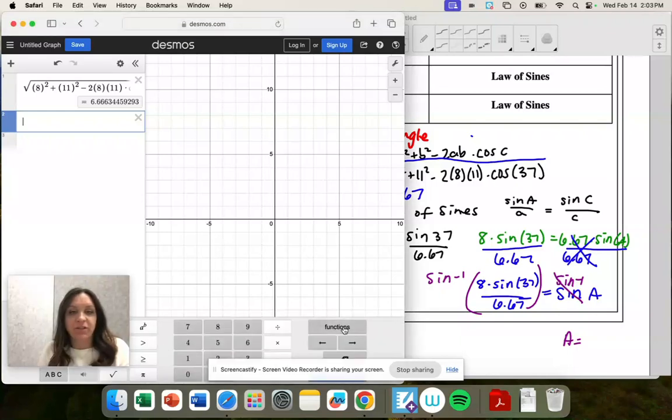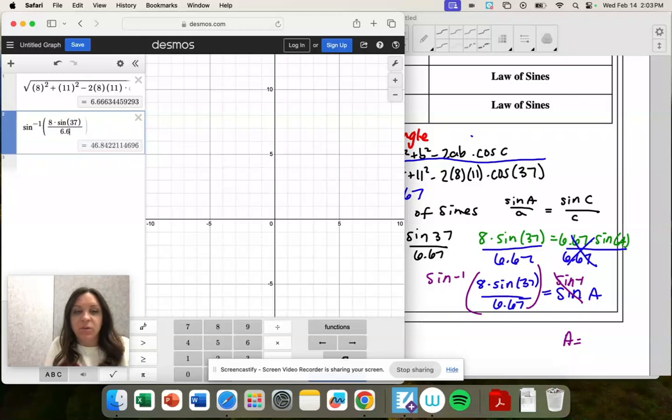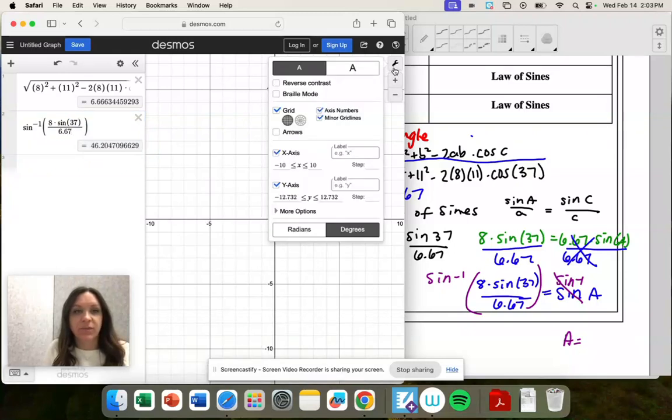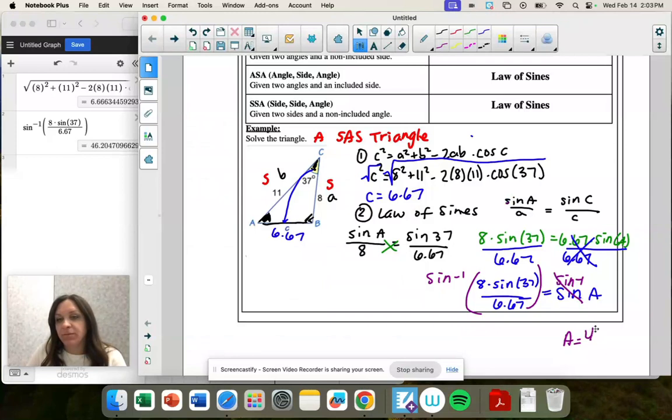Here's our inverse functions. Sine inverse of 8 times sine of 37, all divided by 6.67. I like to check that I'm in degrees a lot. So 46.2 would be angle A.